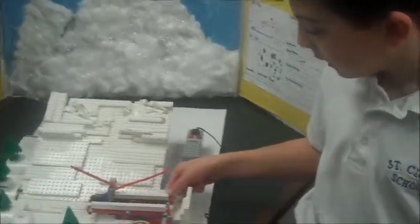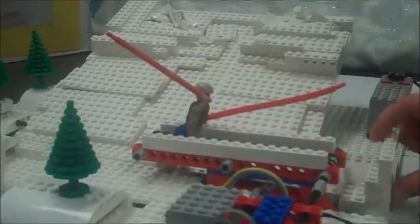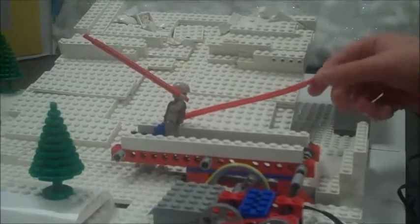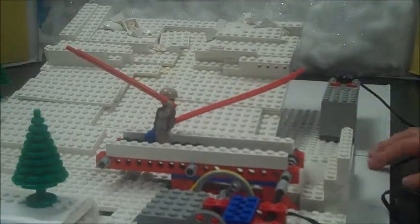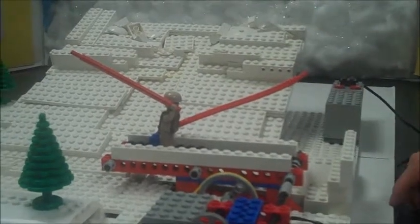This is our skier, and there's only one way for him to get away safely is to be going to the side, because a person can't outrun an avalanche because it's too fast.